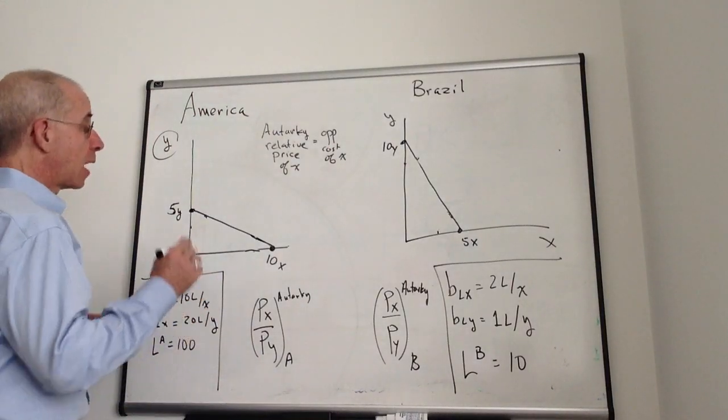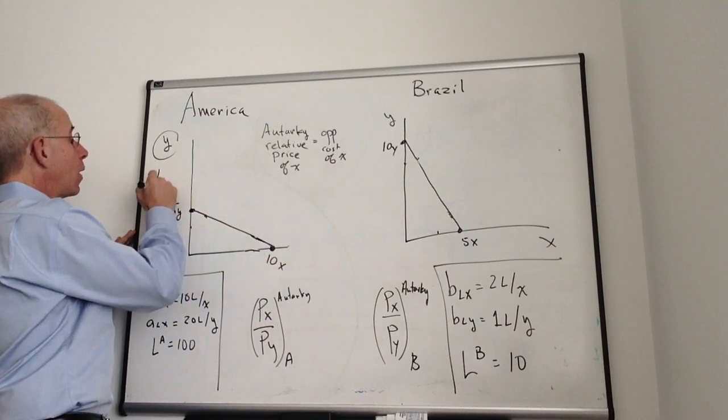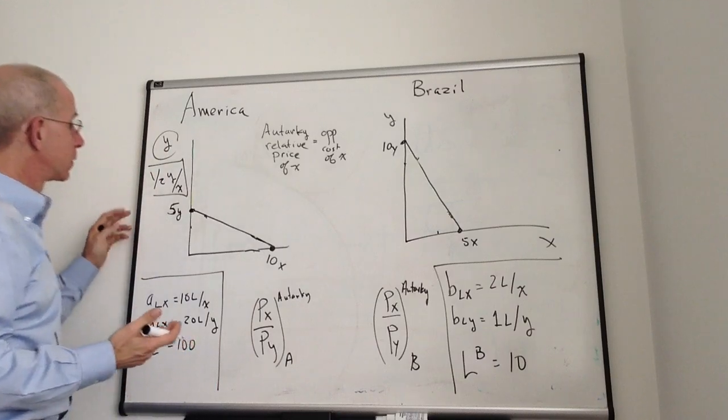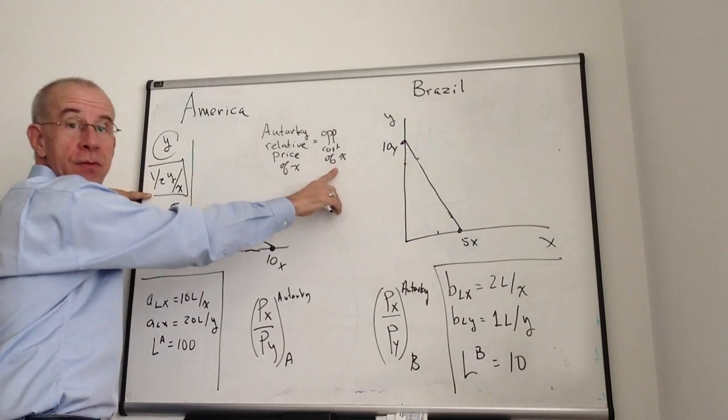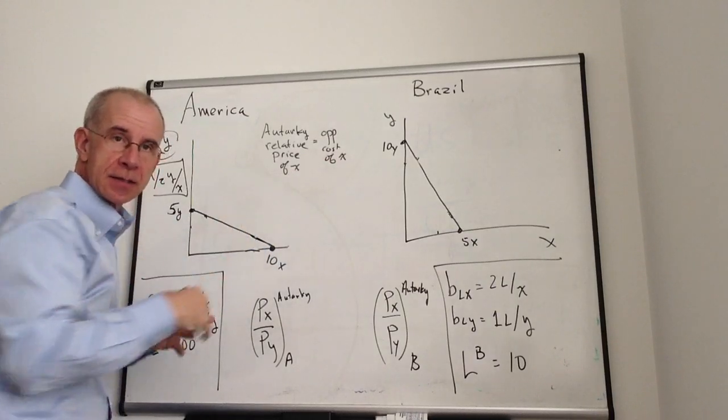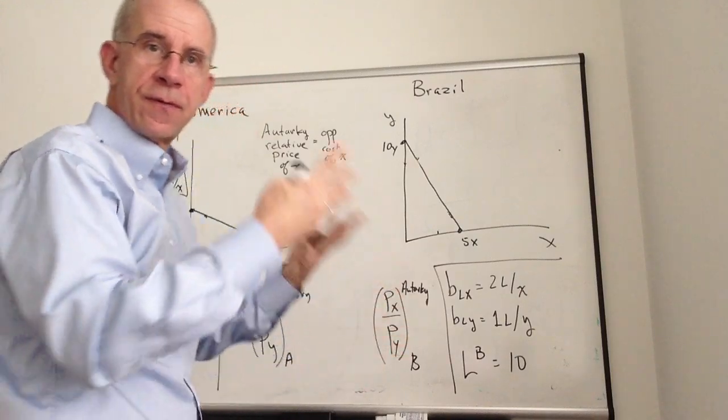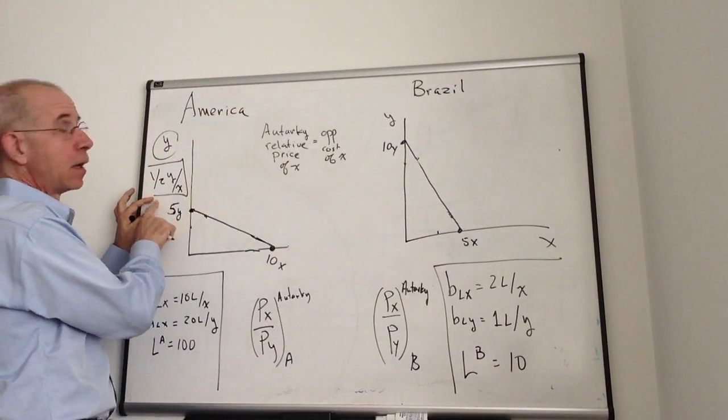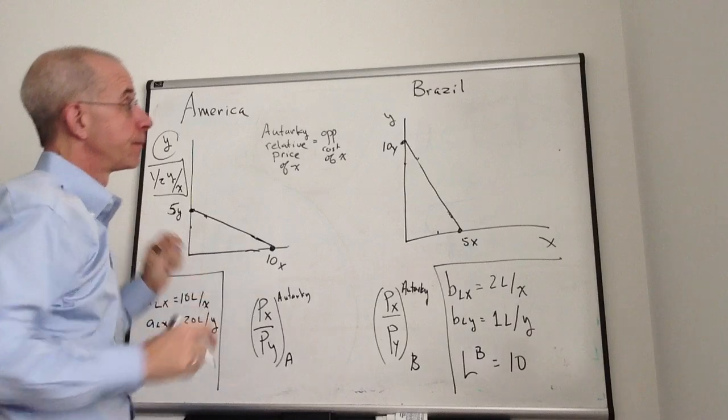What we start with is that the opportunity cost of X in country A is one-half unit of Y per X. So you may want to go to the earlier video if you don't recall that. The opportunity cost of X in country A is one-half unit of Y for every X, which is also equal to the autarky relative price of X.